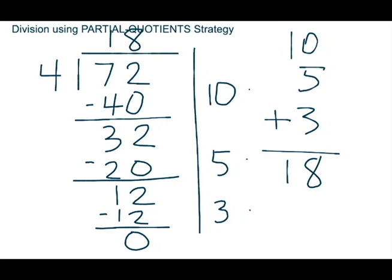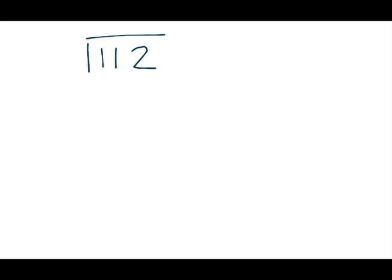I'm going to continue with the partial quotients strategy, and this time I'm going to show you how to solve a three-digit dividend by a one-digit divisor. That problem is 112 divided by 4. I write 112 divided by 4 and draw my line to keep my partial quotients separated from the work on the left-hand side.